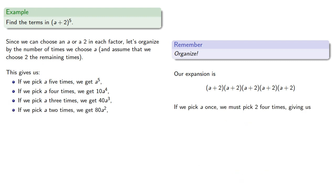If we pick a once, we must pick 2 four times. This term will appear 5 choose 1, five times, giving us 80a.